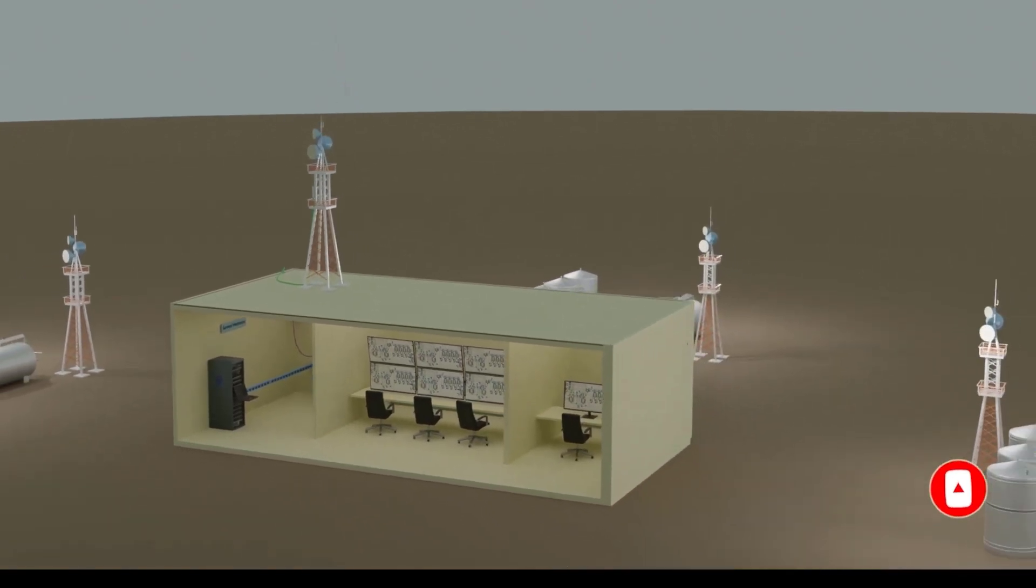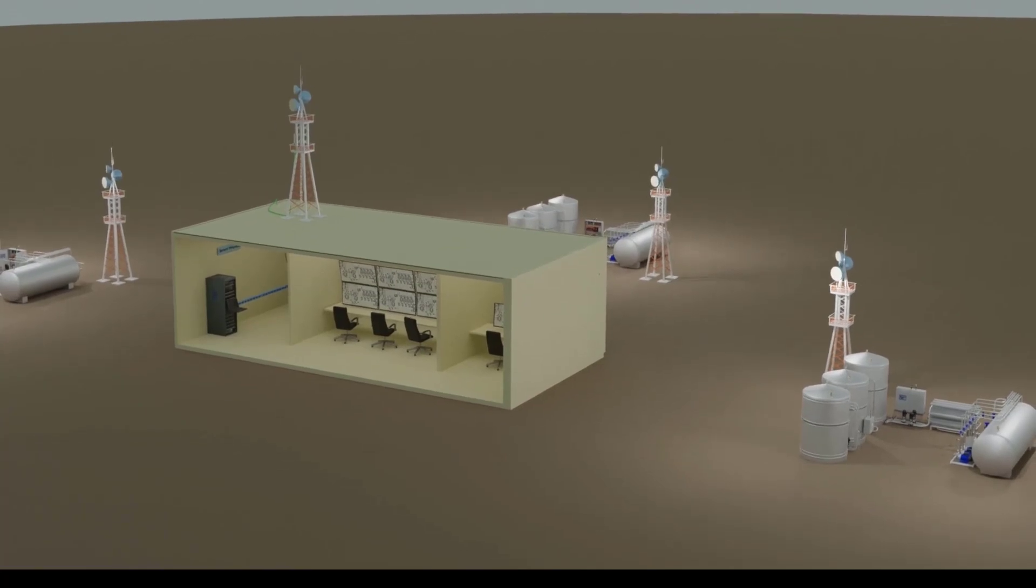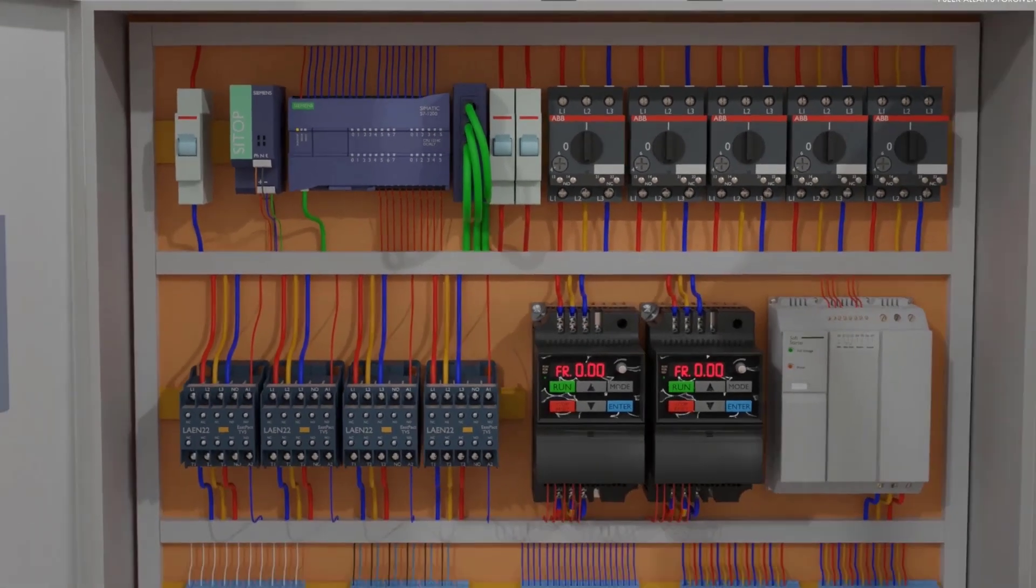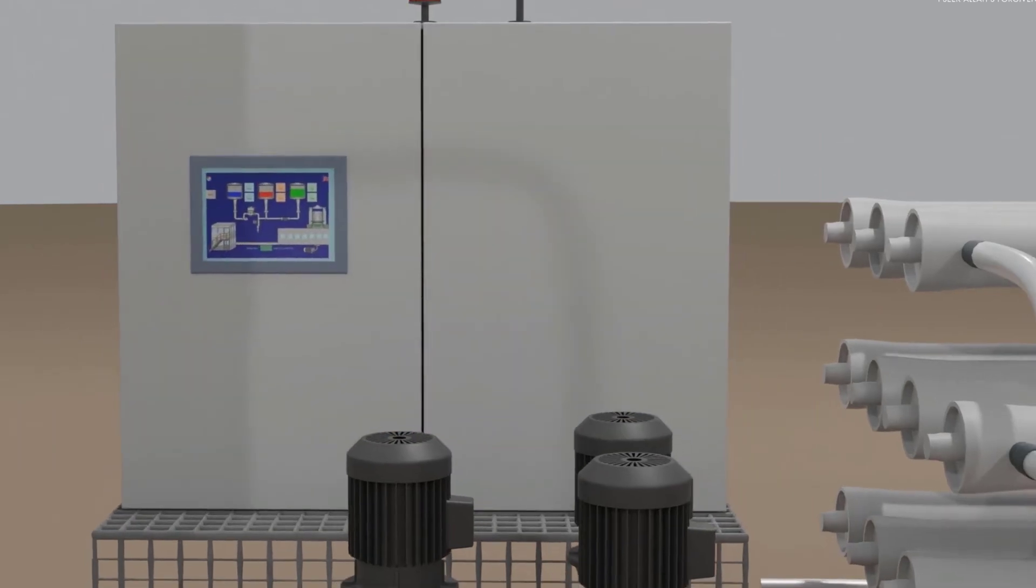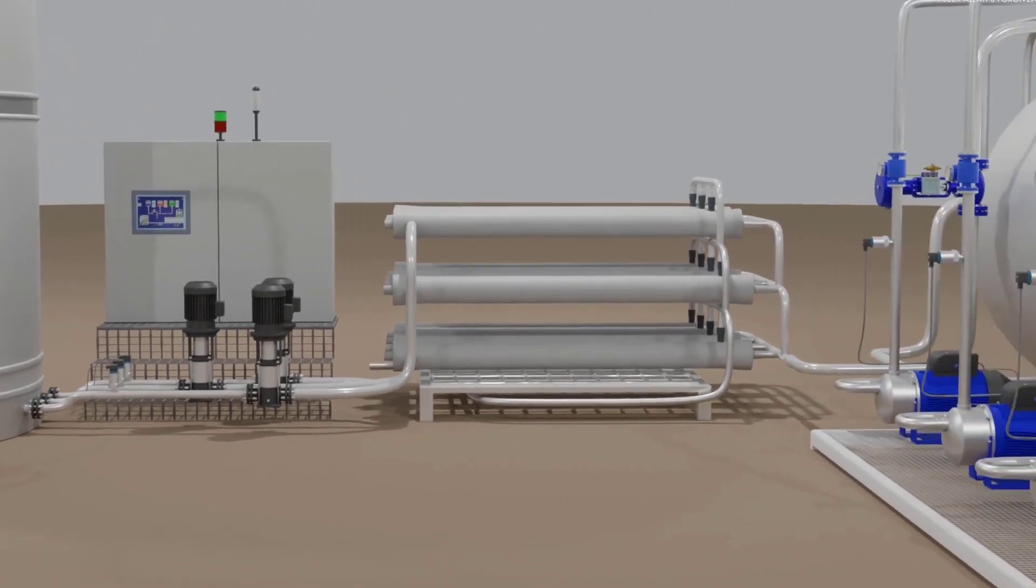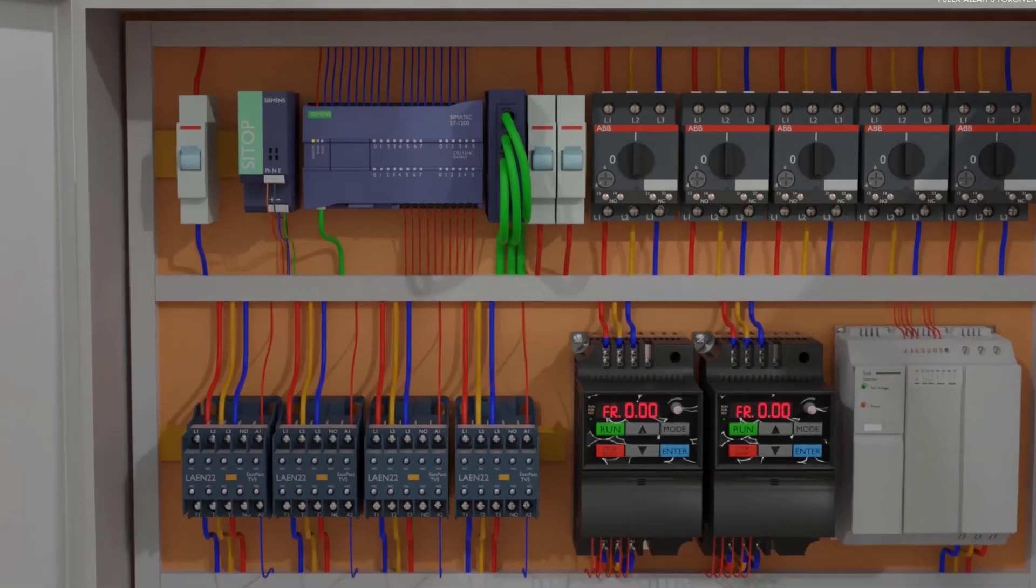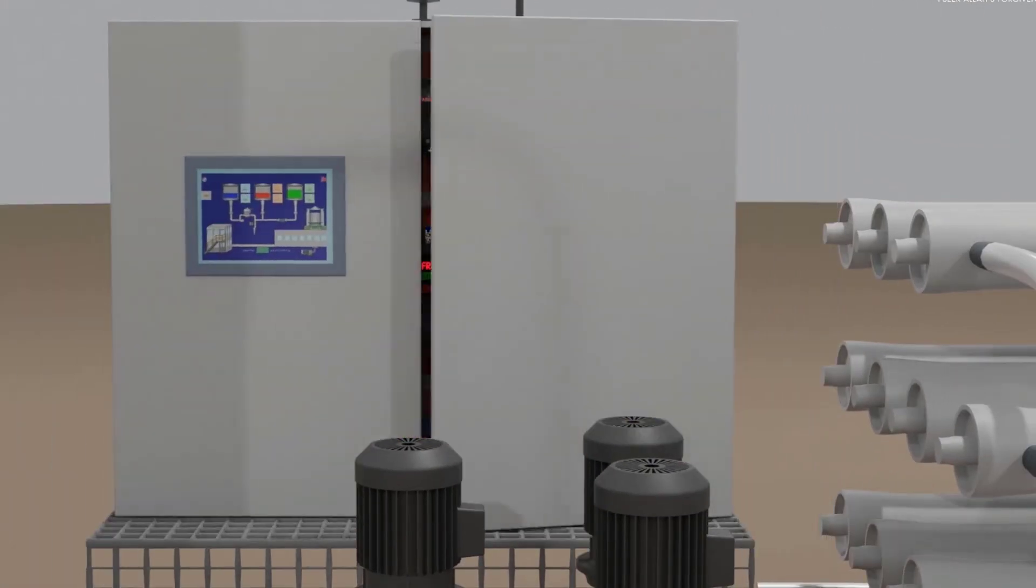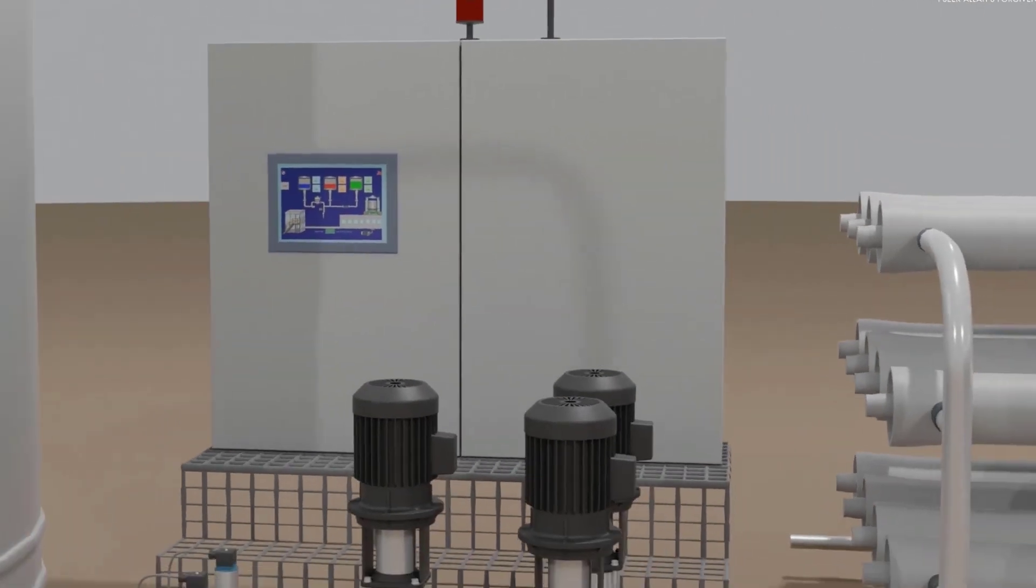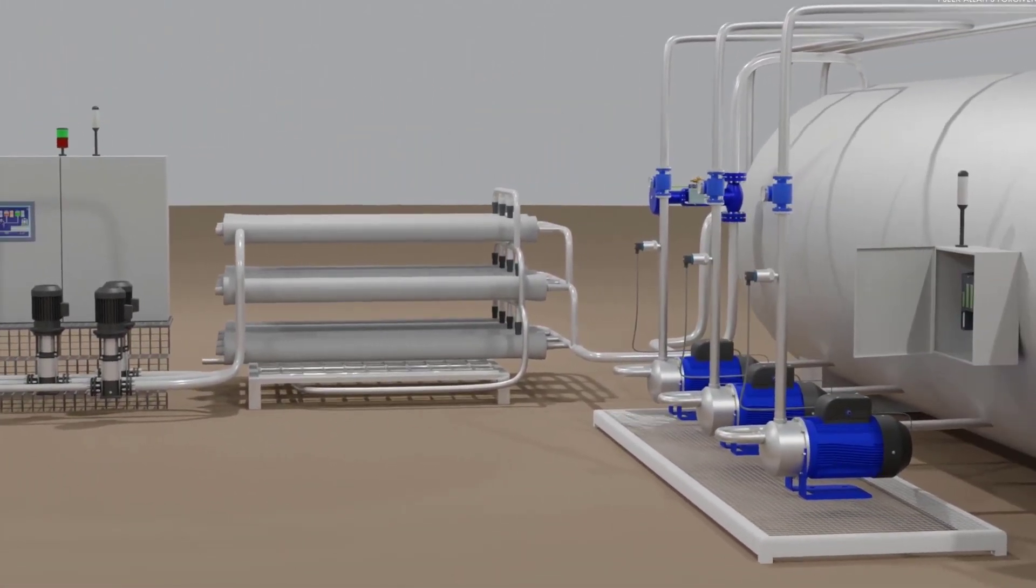First up, let's talk about Programmable Logic Controllers, the backbone of industrial automation. The following are the top three PLC brands that have been dominating the market. First on list is Siemens. Siemens is a powerhouse in the automation industry, and its Simatic series of PLCs have earned a reputation for reliability, performance, and advanced features. From manufacturing to complex processes, Siemens PLCs are widely trusted.